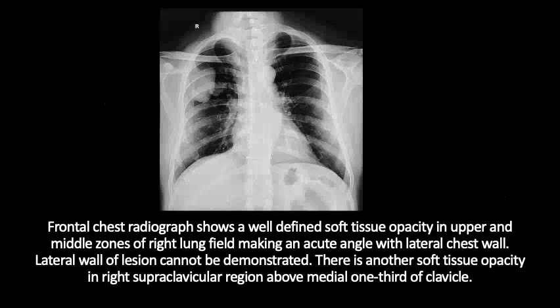A frontal chest radiograph was performed which showed a well-defined soft tissue opacity in the upper and middle zones of the right lung field, making an acute angle with the lateral chest wall. The lateral wall of the region cannot be demonstrated. There is another soft tissue opacity in the right supraclavicular region above the medial one-third of the clavicle.